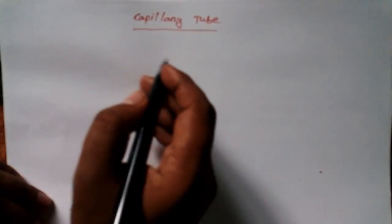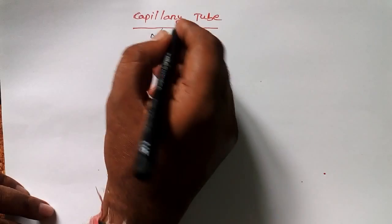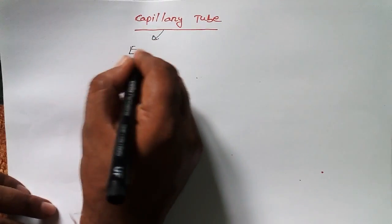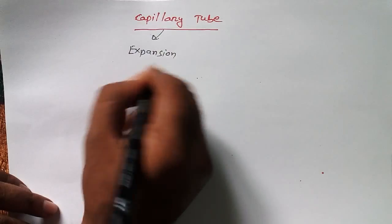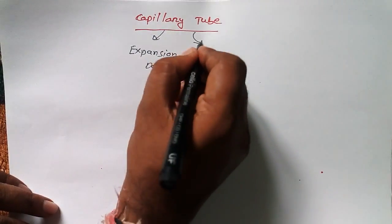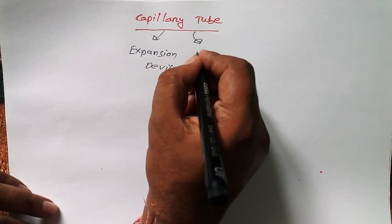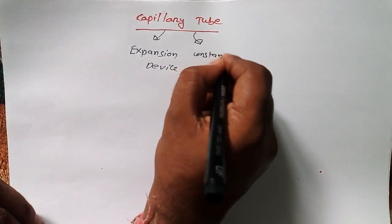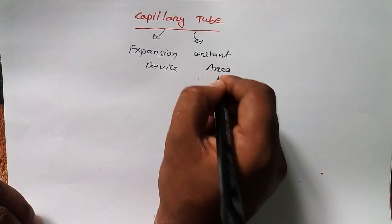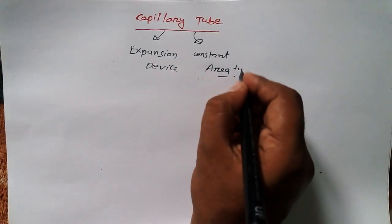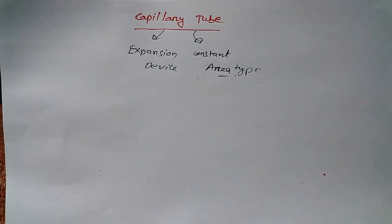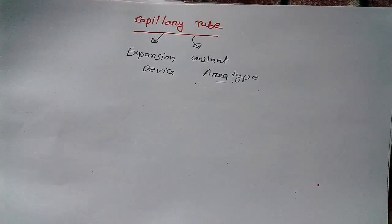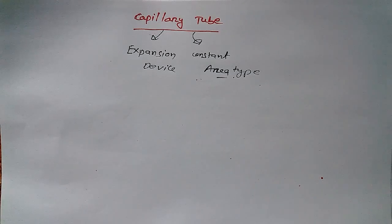Today we want to discuss one of the most important topics known as the capillary tube. The capillary tube is an expansion device — specifically a constant area type expansion device. There are two types of expansion devices: one is constant volume type and another one is constant area type.